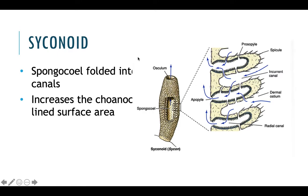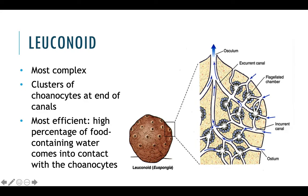Our next most complex is syconoid sponges, which usually still only have one osculum and lots of ostia, but this time the spongocoel is folded to increase the surface area, so you have a folded spongocoel with choanocytes lining the inside. Lastly, we have leuconoid sponges. These are the most complex body plan of sponges — they have lots of folding in their spongocoel, lots of pockets with the choanocytes in these little pockets, lots of ostia, and sometimes they'll actually have multiple oscula — more than one exit point for the water.